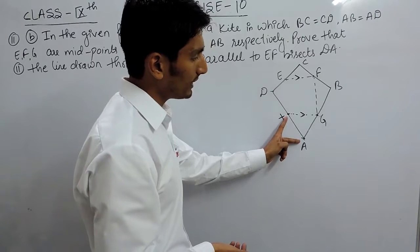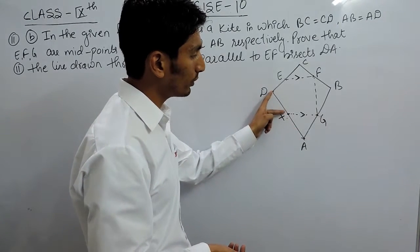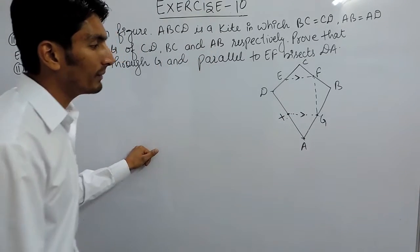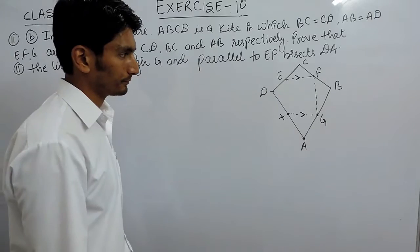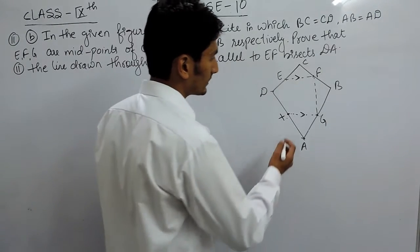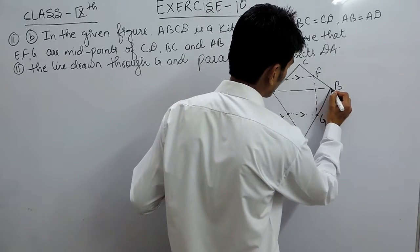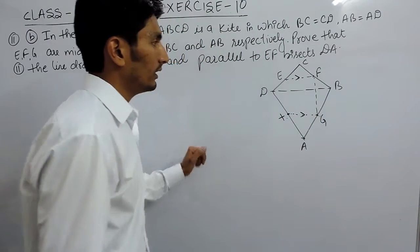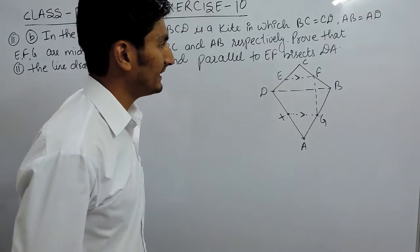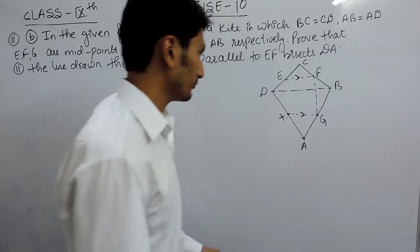This part and this part must be equal — only then will this line bisect, or divide DA into two equal parts. In other words, you have to prove that X is the midpoint of DA. To prove that, I have to divide this into two triangles: ADB and DCB.